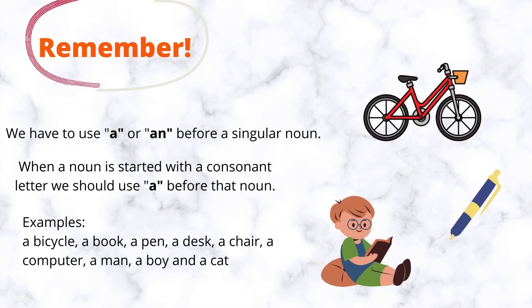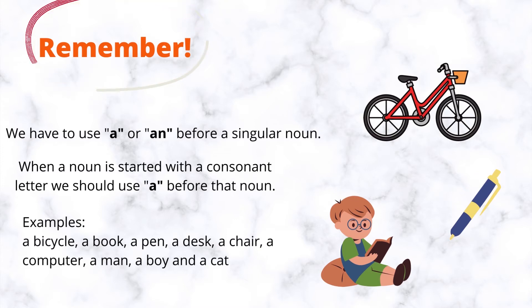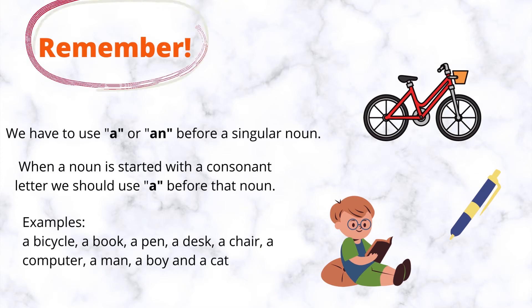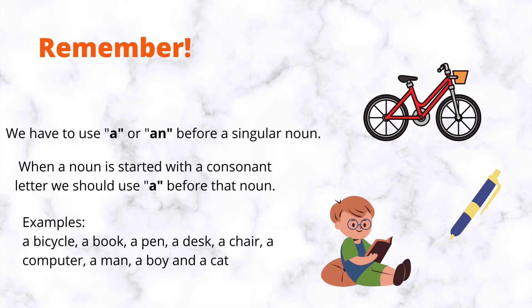Remember, we have to use a or an before a singular noun. When a noun is started with a consonant letter, we should use a before that noun. Examples: a bicycle, a book, a pen, a desk, a chair, a computer, a man, a boy, and a cat.